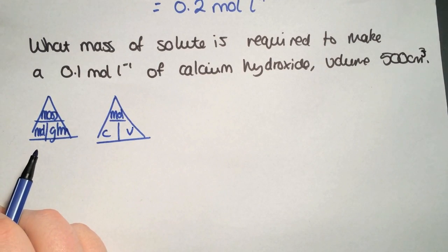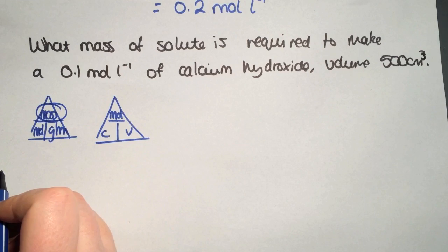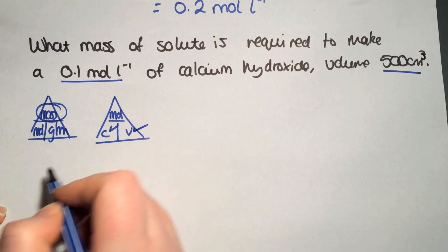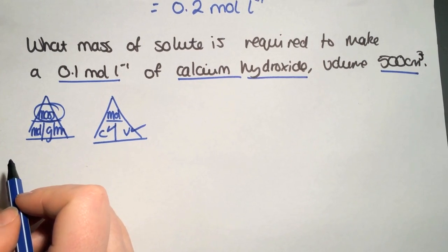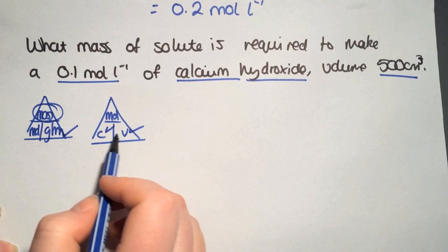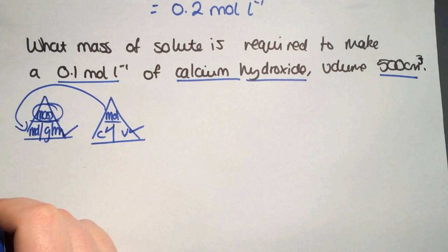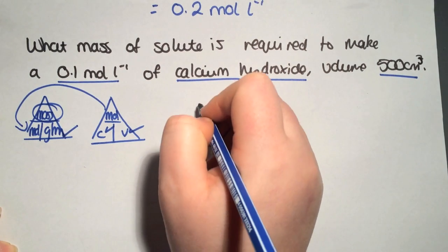Tick off what you've got and what you want to find. We're trying to find mass. You've been given a concentration, a volume, and the name of the solute, so you can work out gram formula mass. This triangle is the one with two ticks, so we can work out the moles and insert that into the second triangle.